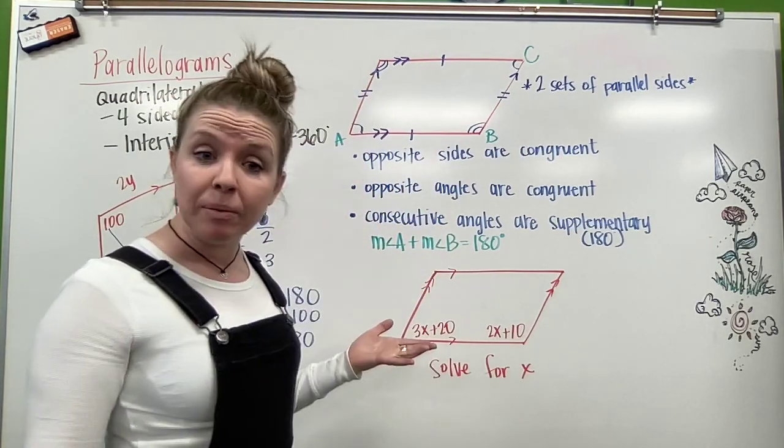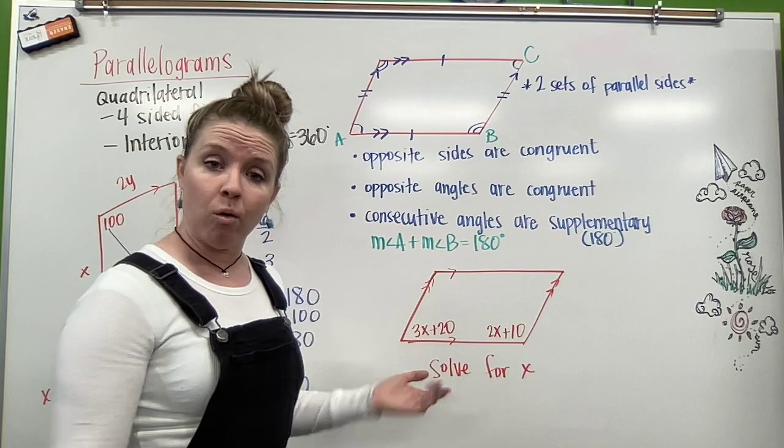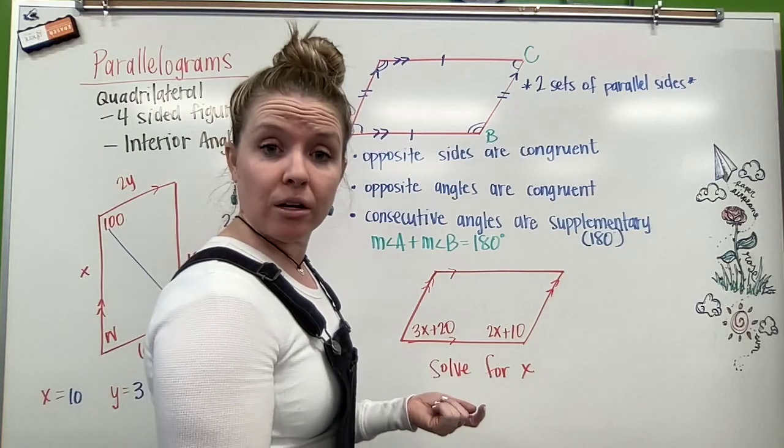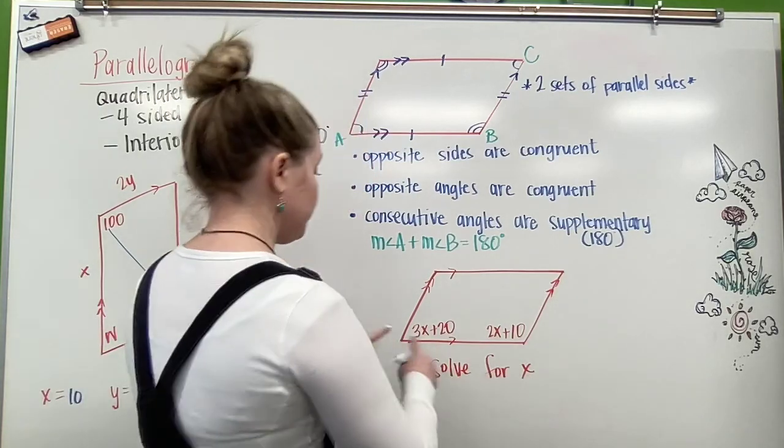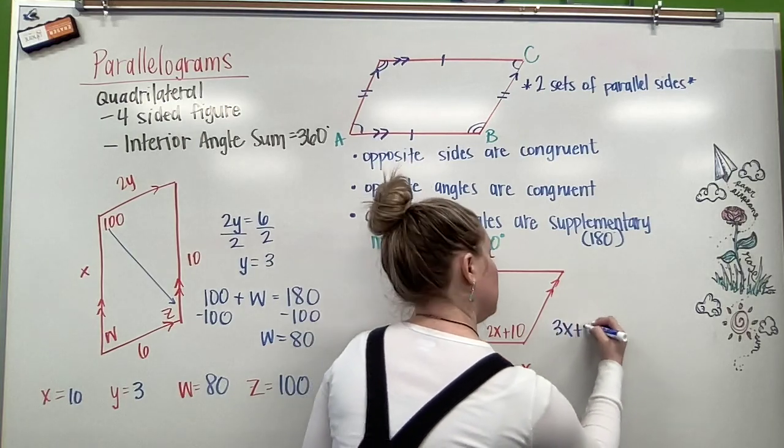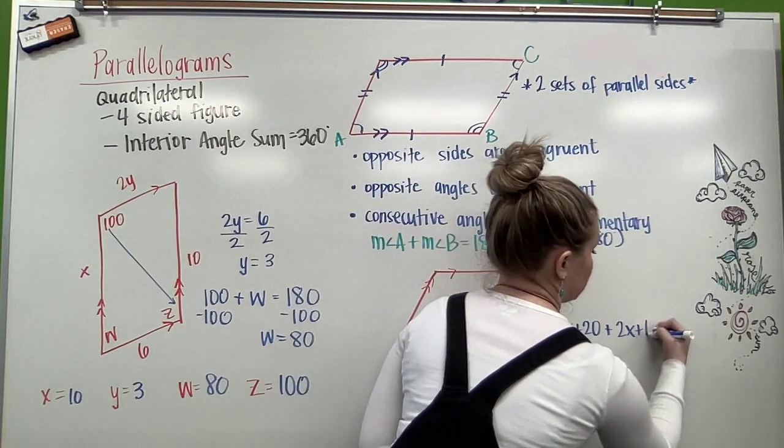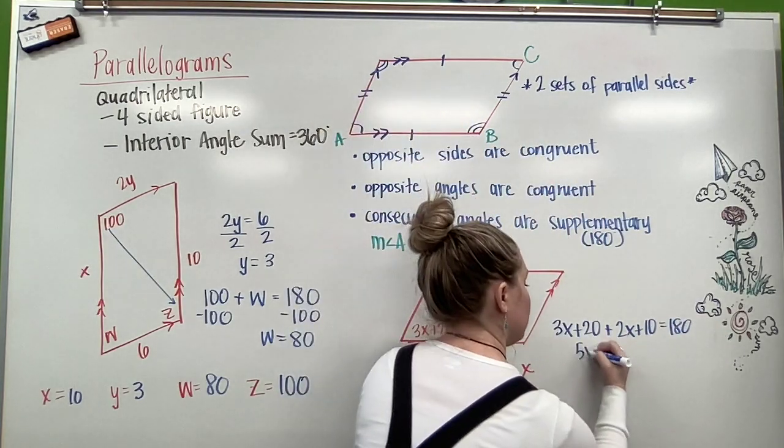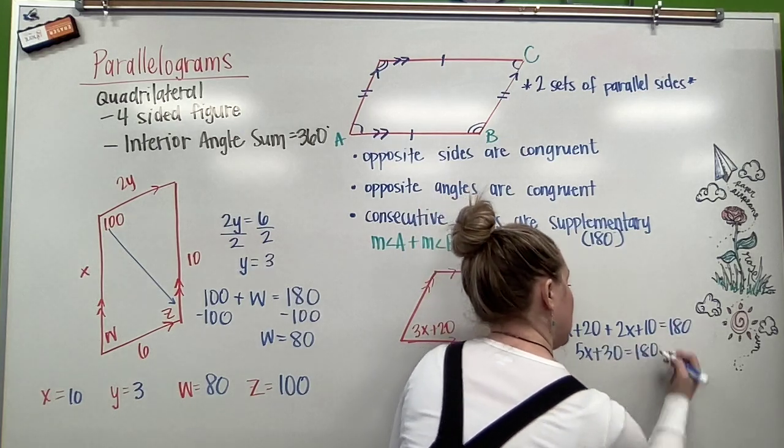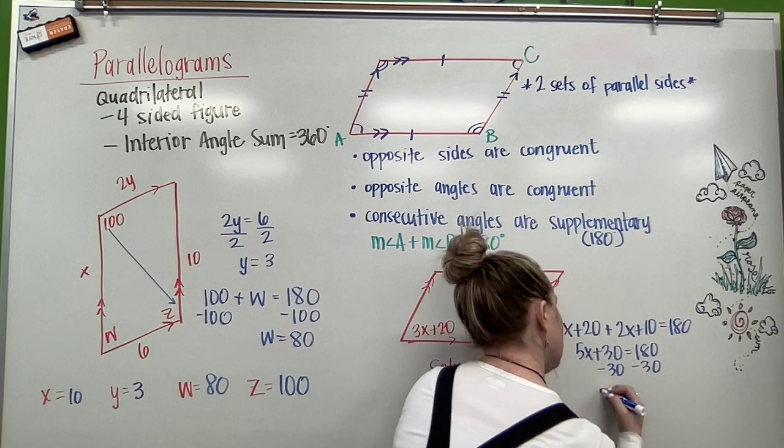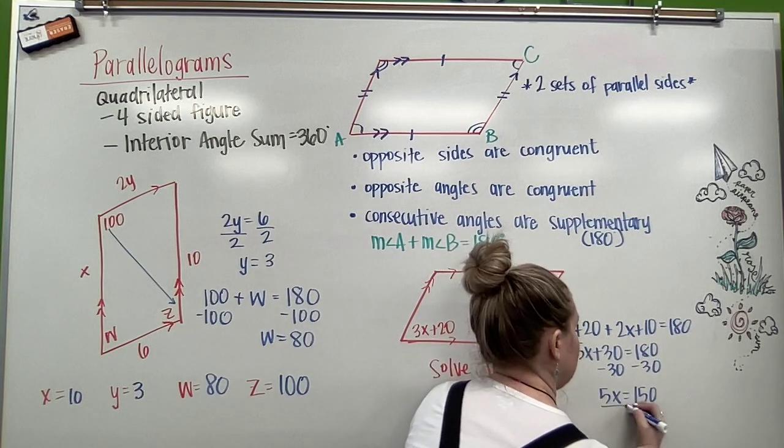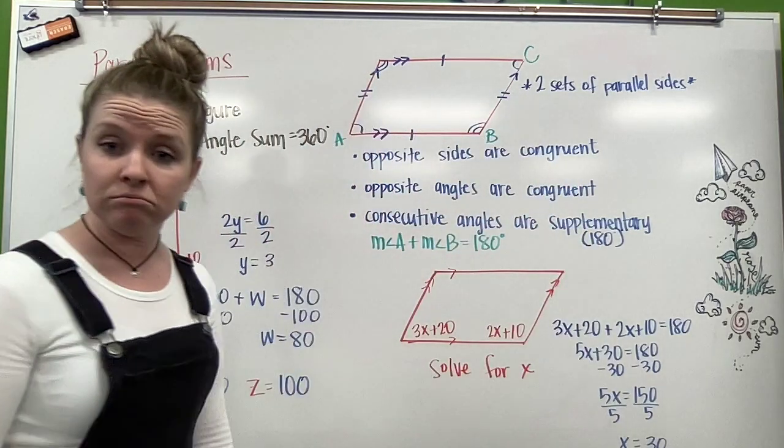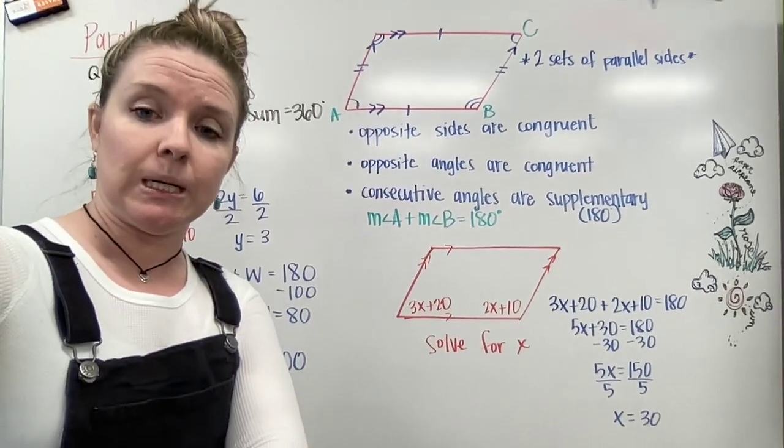So I have an example here that's just a little bit more complex. We have to solve for a little bit more. So this angle and this angle, they would be considered consecutive, they're right next to each other. So what I'm going to do is I'm going to add them together and set this equal to 180. So 3X plus 20 plus 2X plus 10 equals 180. So I'm going to combine like terms. That's 5X plus 30 equals 180. I'm going to minus the 30 over, so 5X equals 150. Divide by 5, and X equals 30.